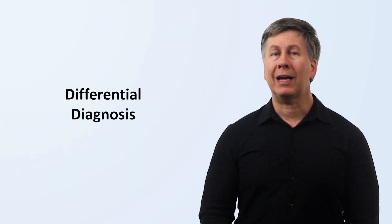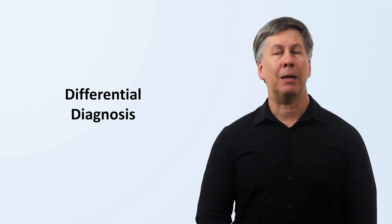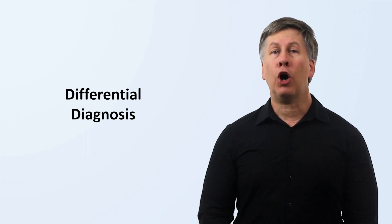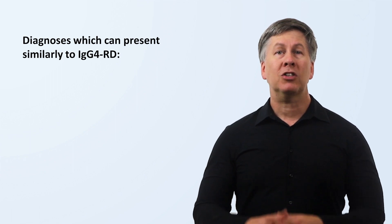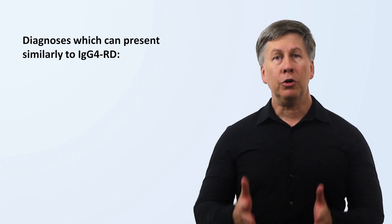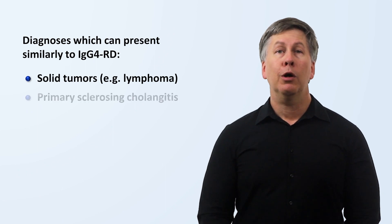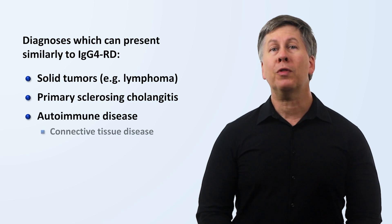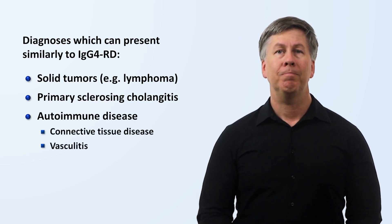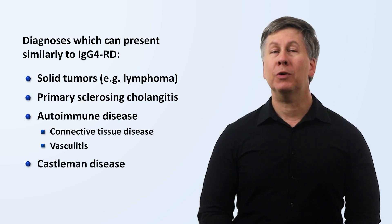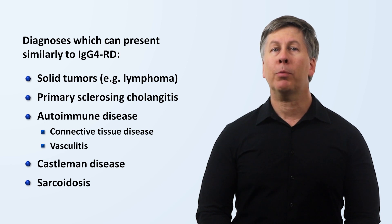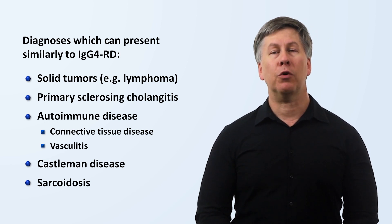Owing to the number of different organs and locations that IgG4-RD can manifest, and its ability to be either systemic or very focal, the disease is often misdiagnosed. Some of the more common mimics include solid tumors of almost any organ, primary sclerosing cholangitis, a variety of autoimmune diseases including connective tissue disease and vasculitis, Castleman disease presenting with diffuse lymphadenopathy, and sarcoidosis, particularly when there are prominent lung manifestations.